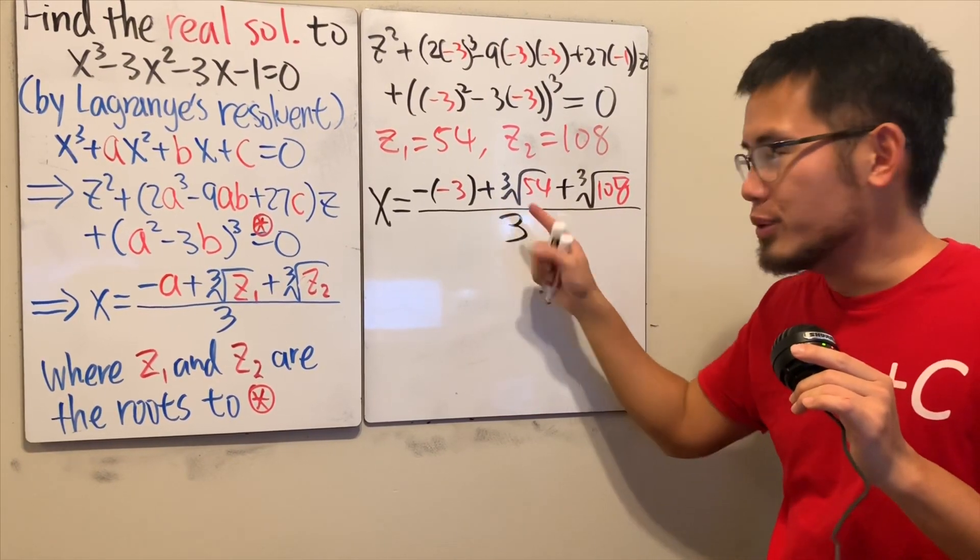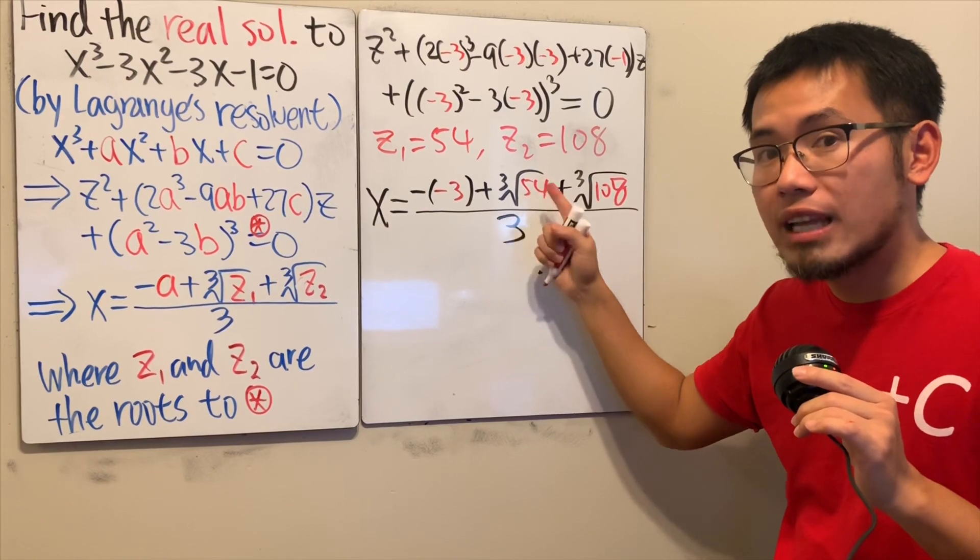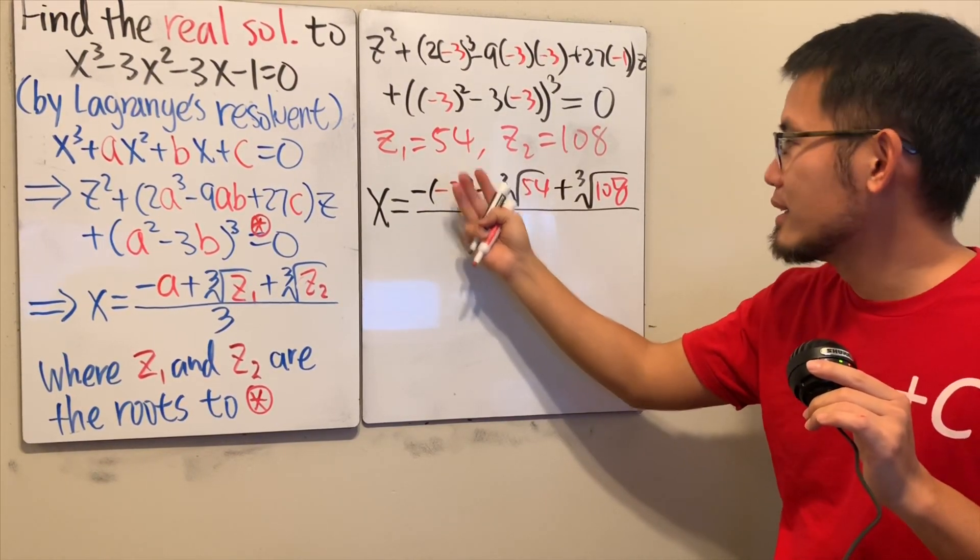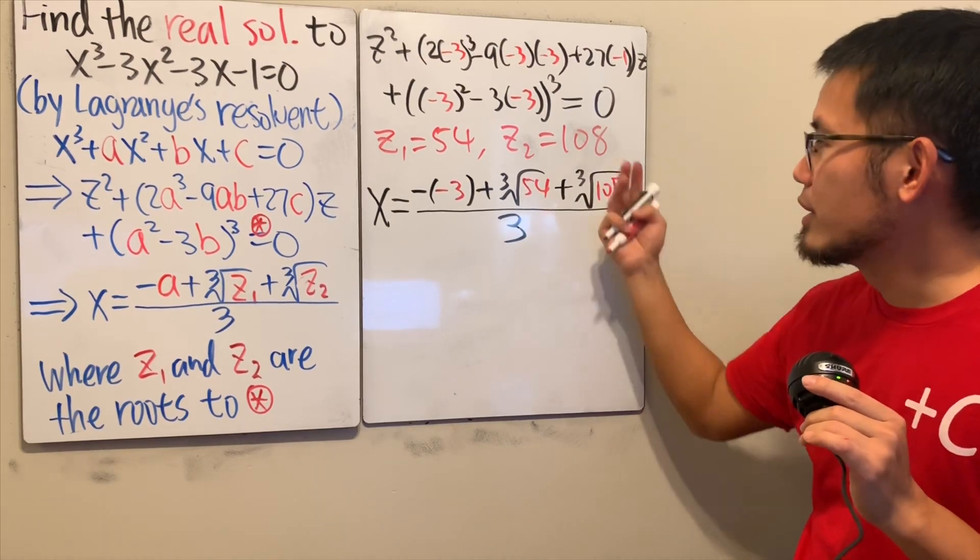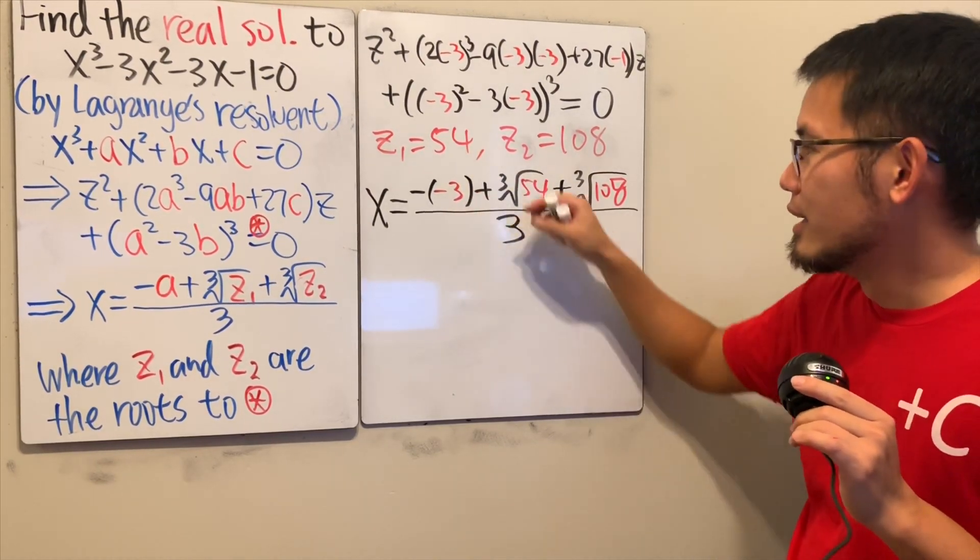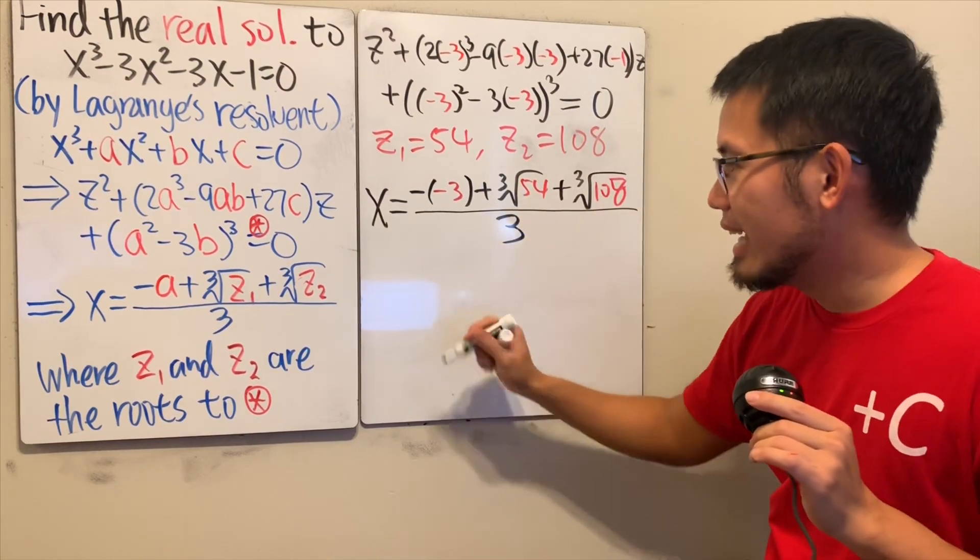Now, if we simplify this, you know this is the same as 27 times 2. So you can factor out a 3. And then this right here is 27 times 4, and again, you can factor out the 3. So you can divide out the 3. In the end, x is nicely equal to...